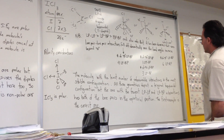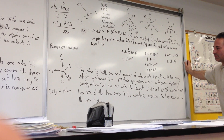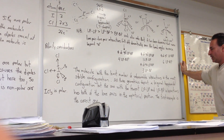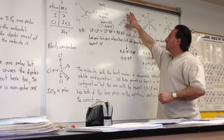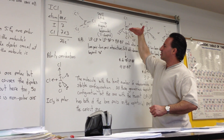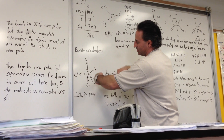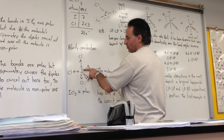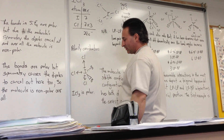In conclusion, the molecule with the fewest unfavorable interactions is the most stable configuration. All three geometries depict the trigonal bipyramidal arrangement, but the one with the fewest lone pair–lone pair and lone pair–bonding pair interactions is the most favorable — and that is the first example, with both lone pairs equatorial. For polarity, when the molecule is redrawn with all three chlorine atoms visible, chlorine is more electronegative than iodine so the dipoles point toward the chlorine atoms. Two of the dipoles cancel each other, but one does not, so the molecule is polar overall.